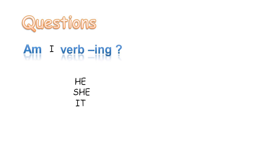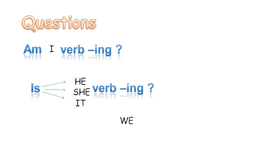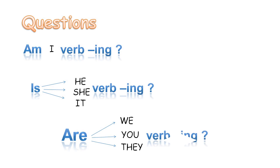And now let's see how we can ask questions with the present continuous tense. We put 'is' to the beginning and use verb-ing with he, she, or it. When we want to ask a question with we, you, and they, we put 'are' to the beginning and use verb-ing.